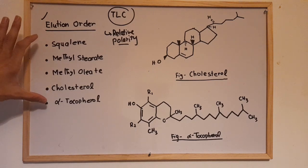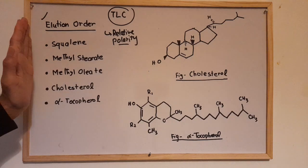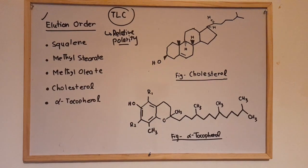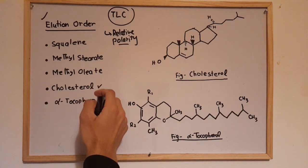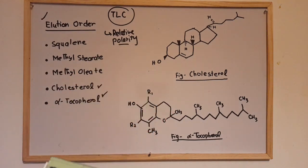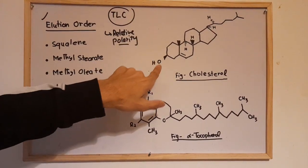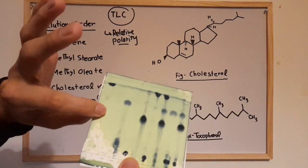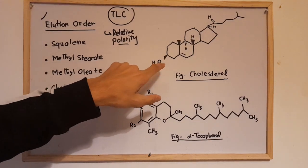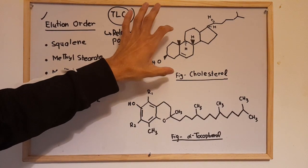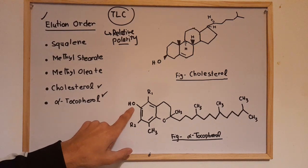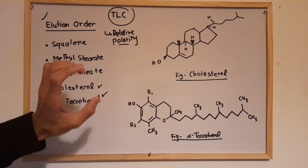To determine elution order, you must examine the structure of each compound to check whether they are polar or non-polar. For example, looking at cholesterol and alpha-tocopherol: cholesterol has a hydroxyl group, and since the stationary phase — silica or alumina — interacts with polar components, this hydroxyl group will interact with the stationary phase. Alpha-tocopherol also contains a hydroxyl group, so it too interacts with the stationary phase.